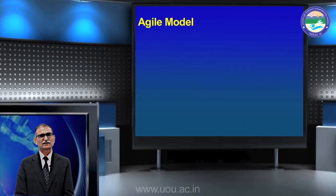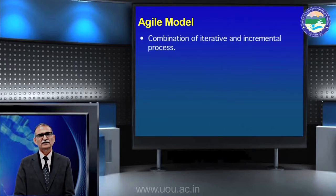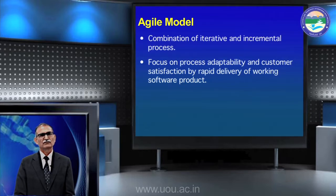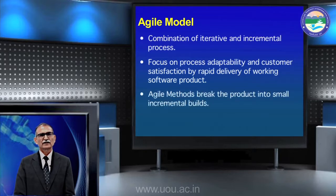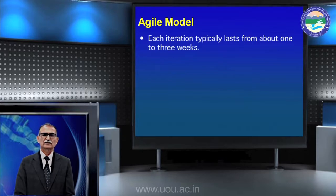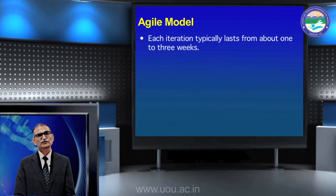Agile model — agility, as we know, is very flexible and very fast. It is the ideal combination of iterative and incremental processes. Its full focus is on customer satisfaction and rapid delivery of working software projects. In two to three weeks you give the customer a working model. The product is divided into small incremental builds, and on these builds we do iterations. Each iteration takes two or three weeks, and gradually we keep showing and offering it to the customer, whose requirements may also change.